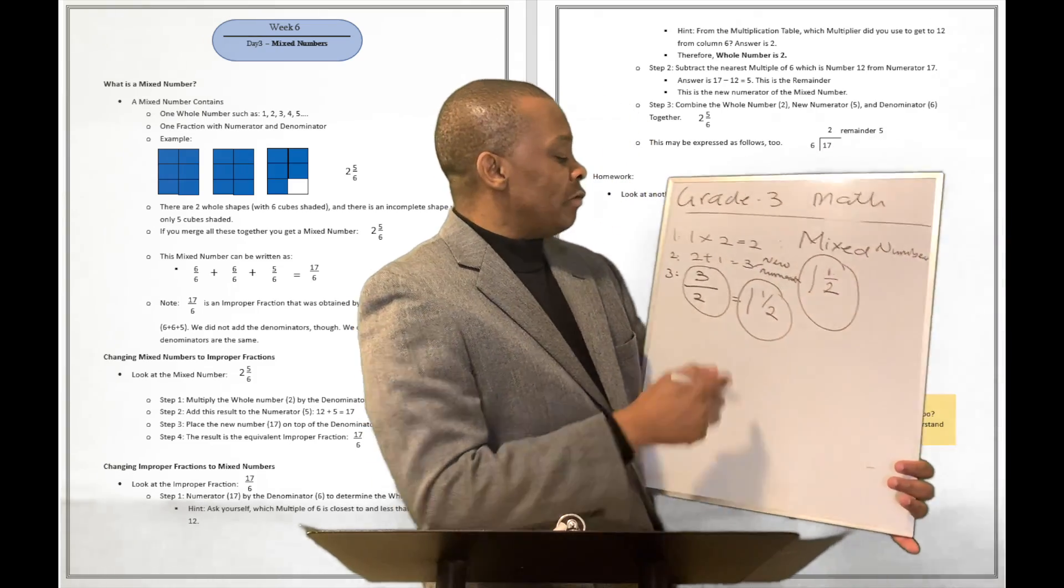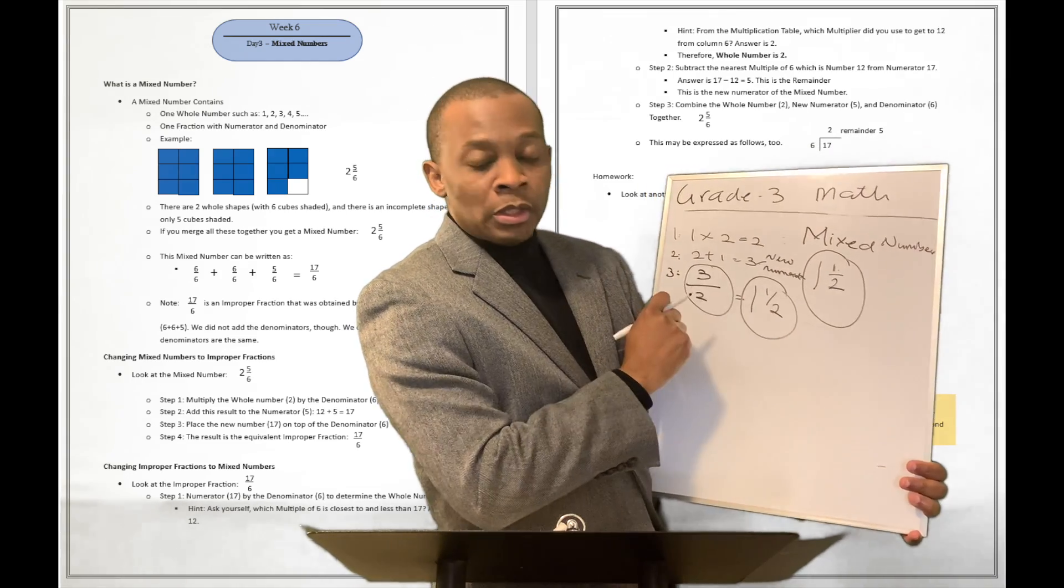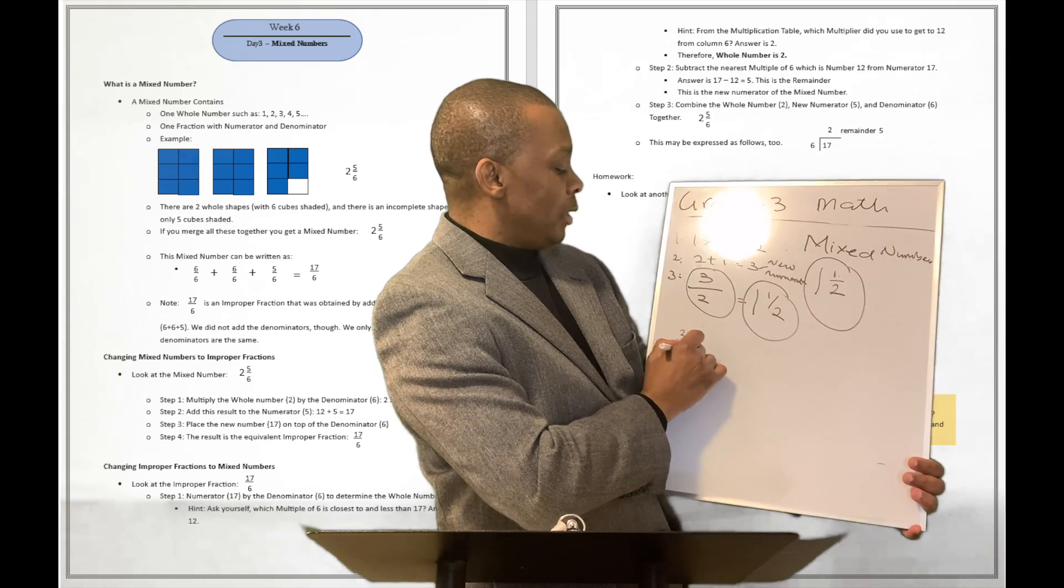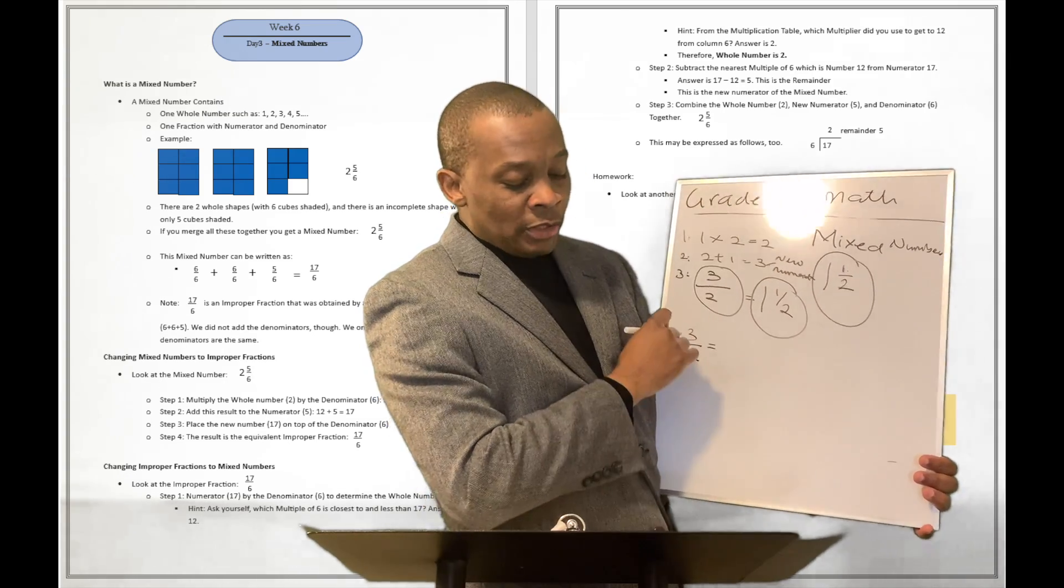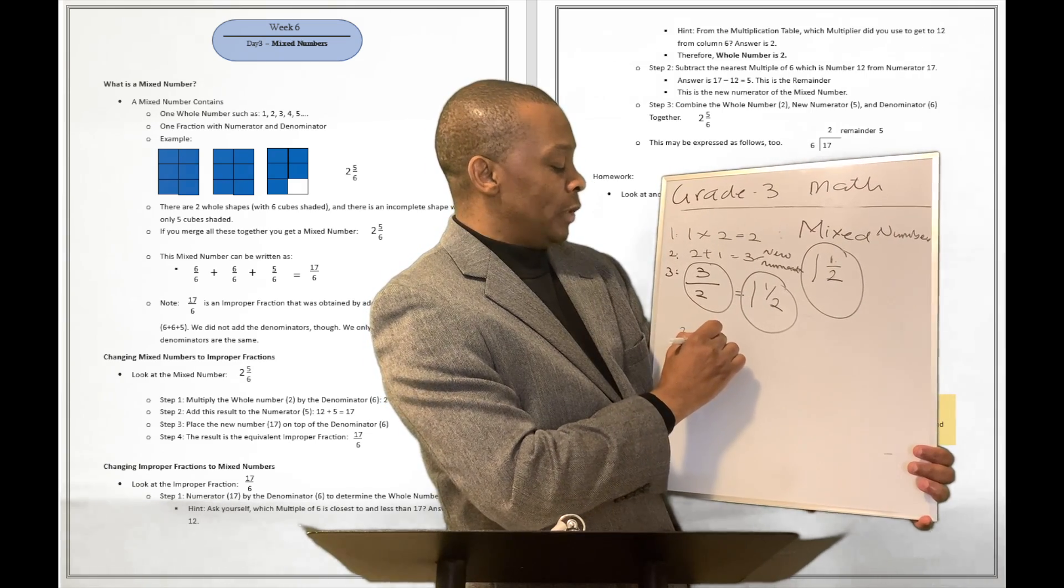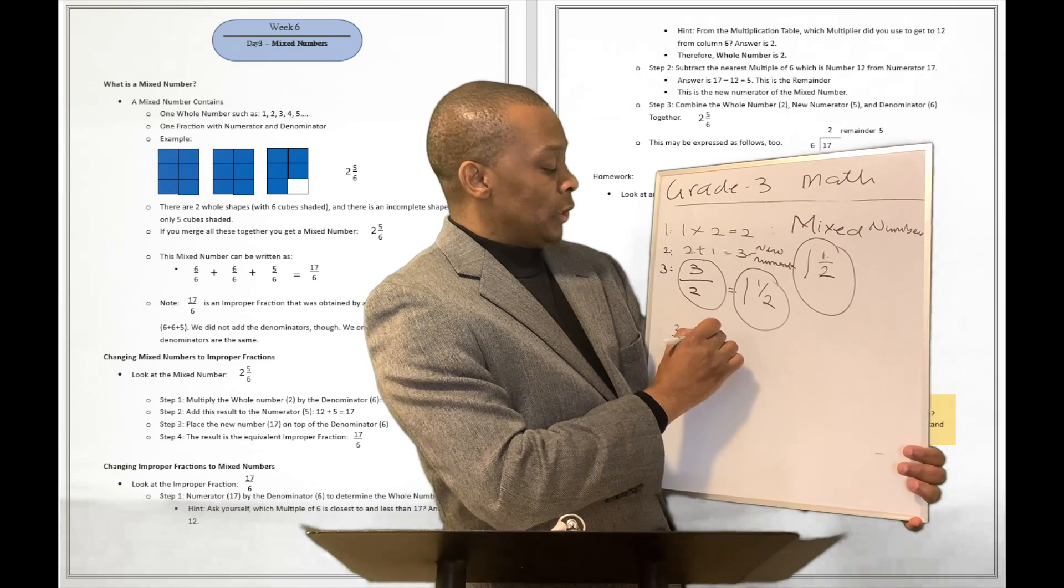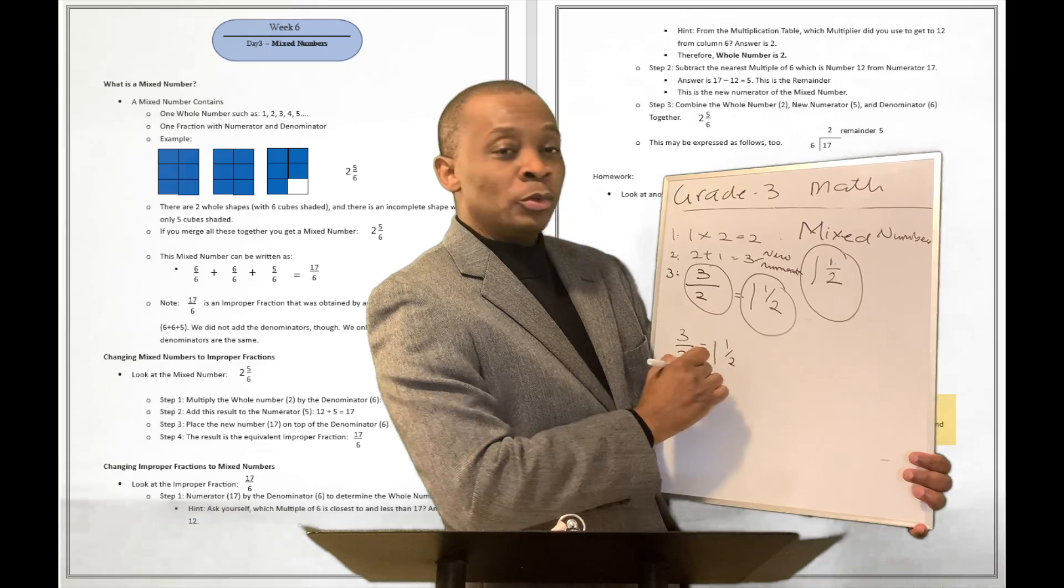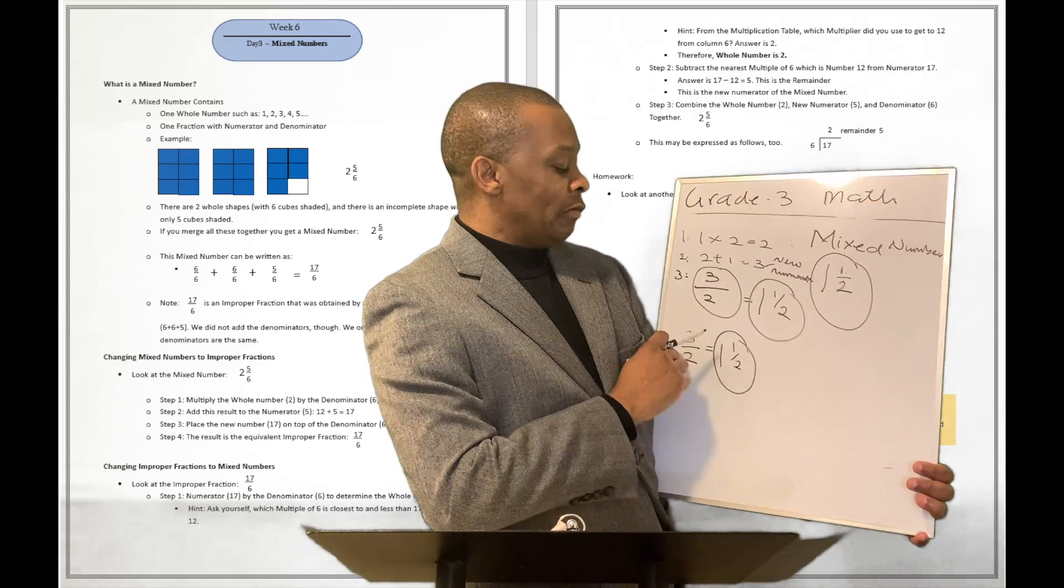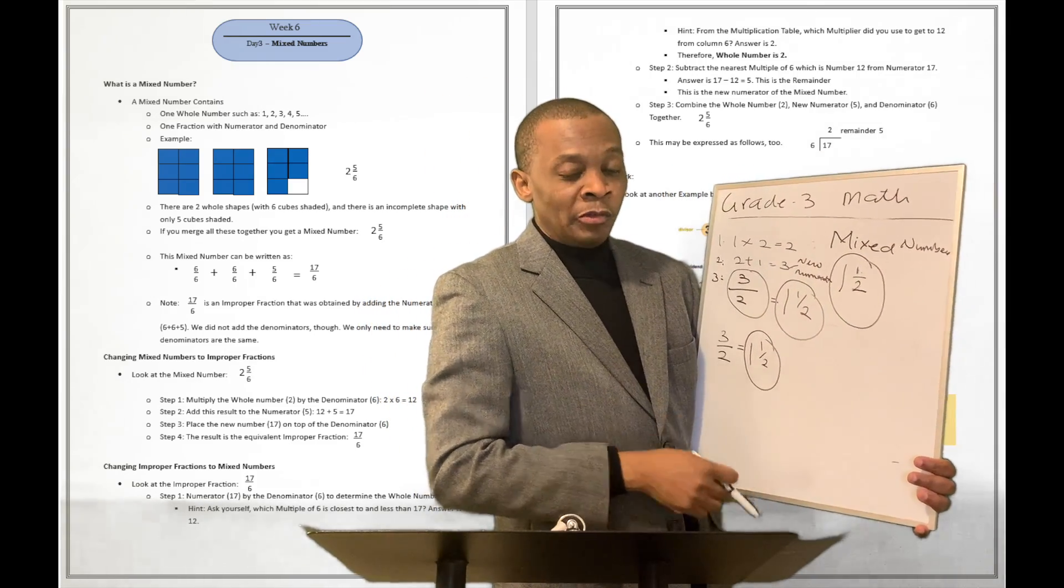Well, in the same way, you can convert this improper fraction back to a mixed number. So let's see how to do that. So you're going to say three divided by two. When you say three divided by two, you're going to say, well, three divided by two is going to be equivalent to one and remainder one, right? So you're going to say remainder one divided by two. Well, guess what? That's going to be your mixed number. So you convert it from an improper fraction to a mixed number over there.